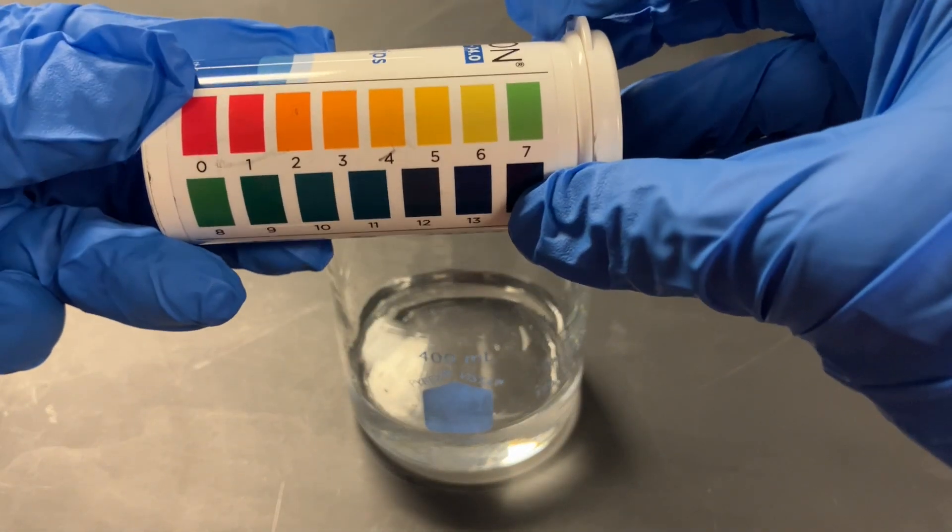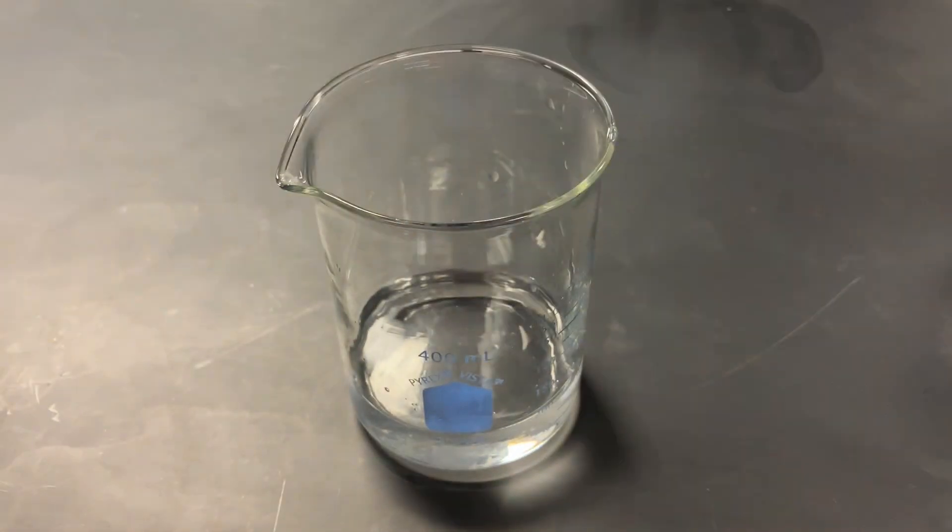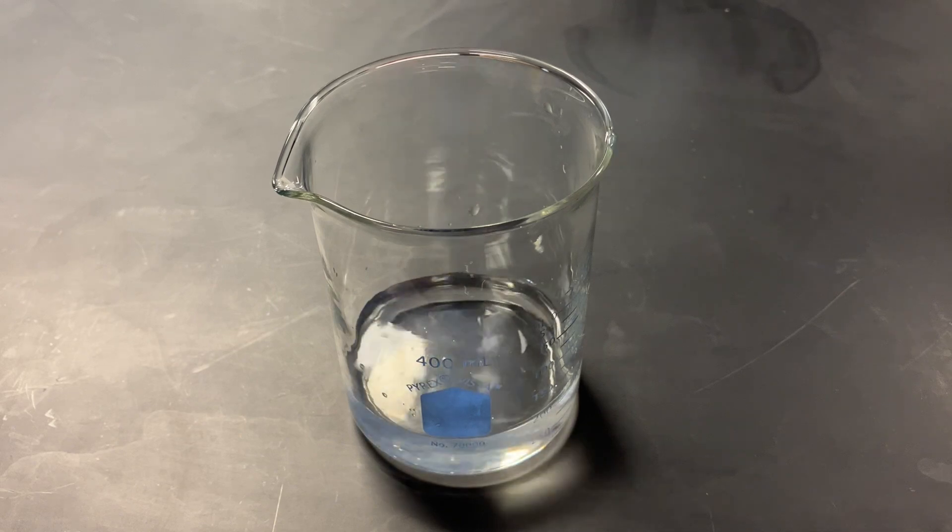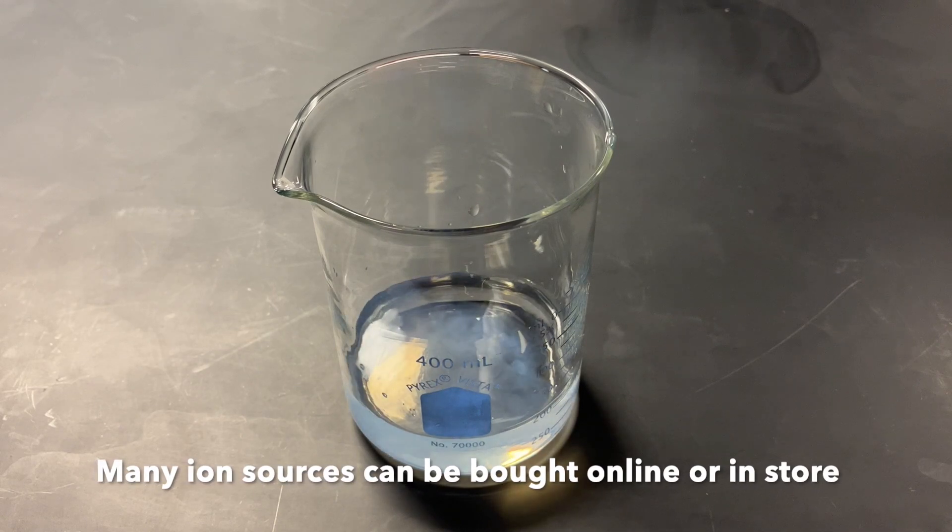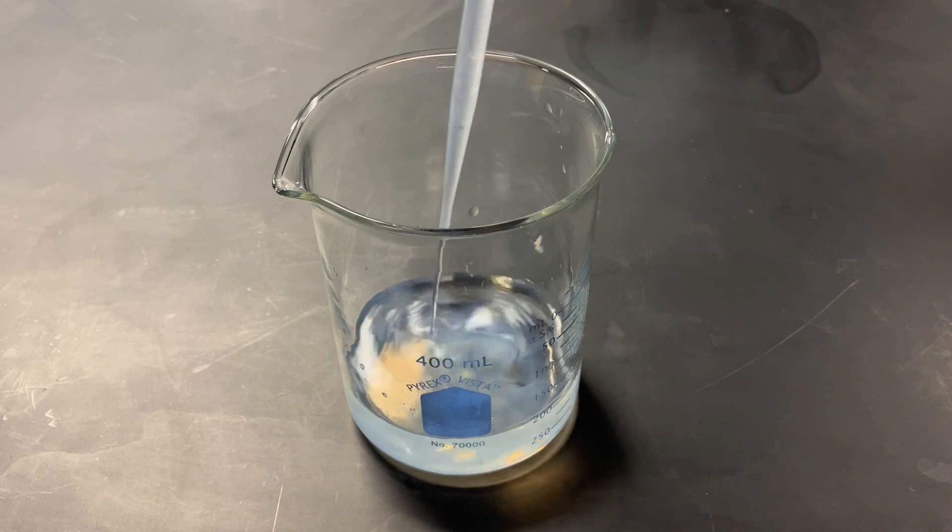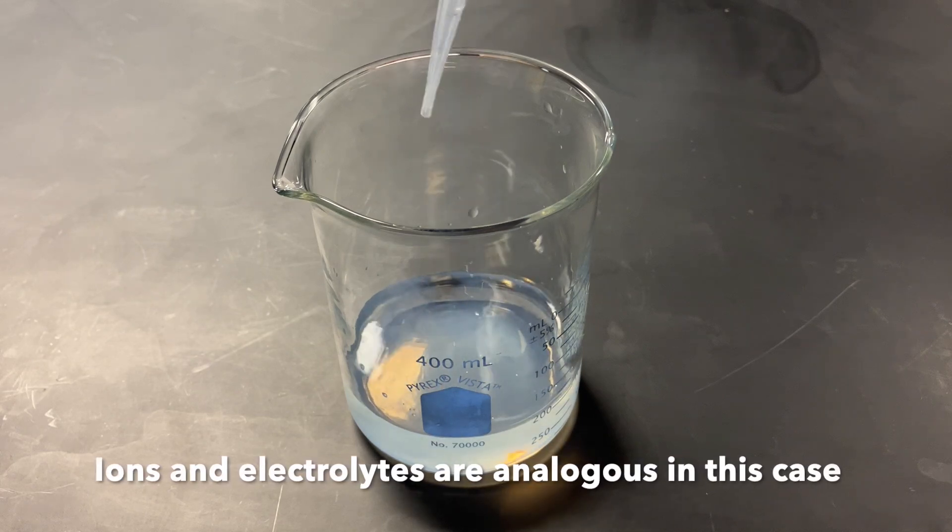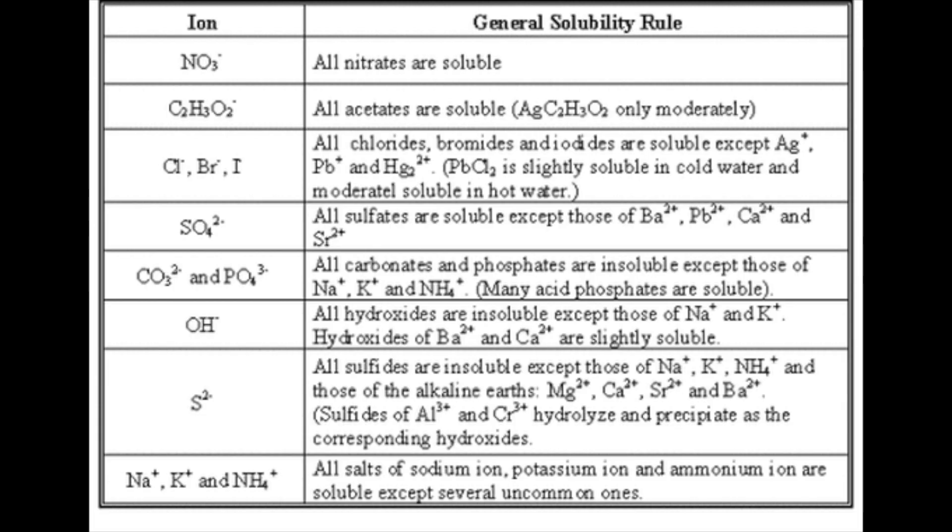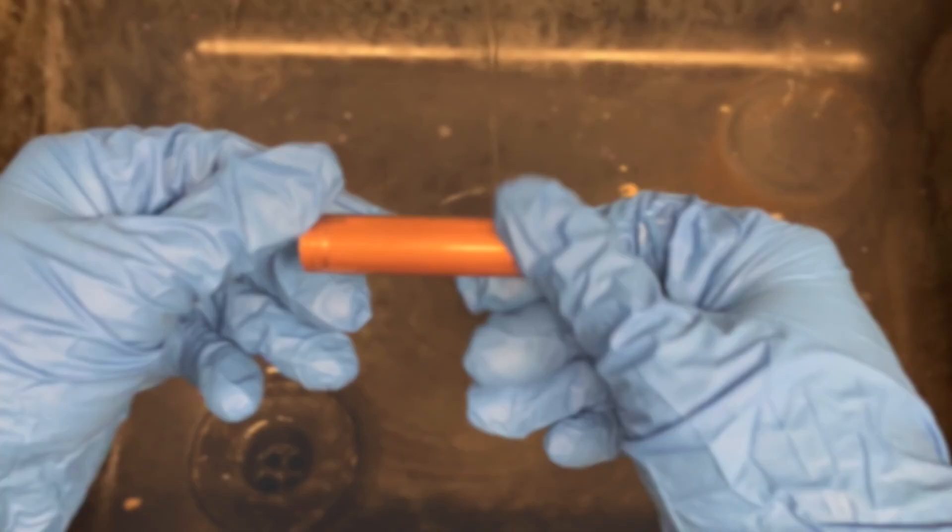The specifics of how much acid to add depend on the volume of your solution, but in general you want to stick to a pH around 4. Then I added a metal ion source to the solution, in this case silver nitrate. Keep in mind, whatever metal you want to plate has to be in the solution. I did not use deionized water, so the cloudiness you see is the result of silver chloride forming, which is insoluble in solution, but this won't cause any issues.